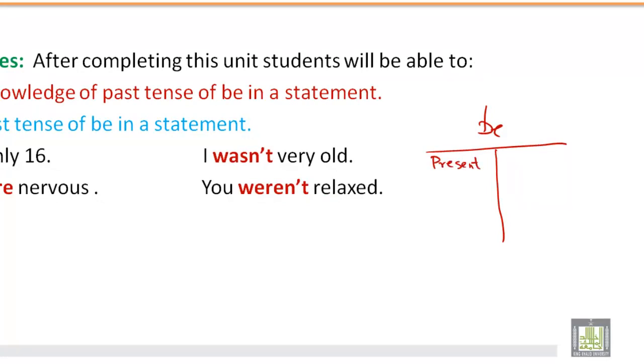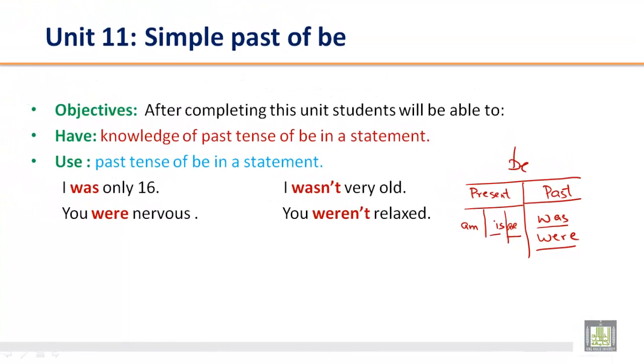We have am, is, and are. In past we have only two forms: is becomes was and are becomes were. So we have just two forms. Is in present we use it for singular, in past is becomes was. For singular we use was in the past. In present we use are for plural, in past this changes to were.